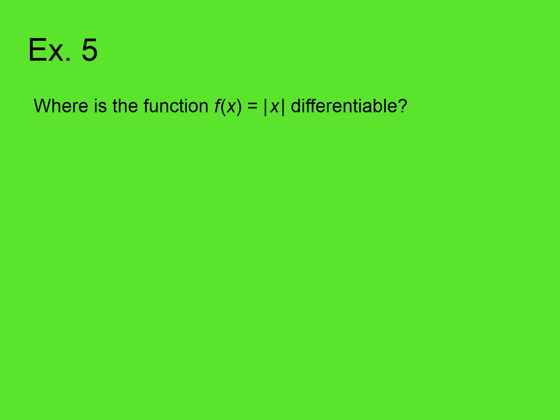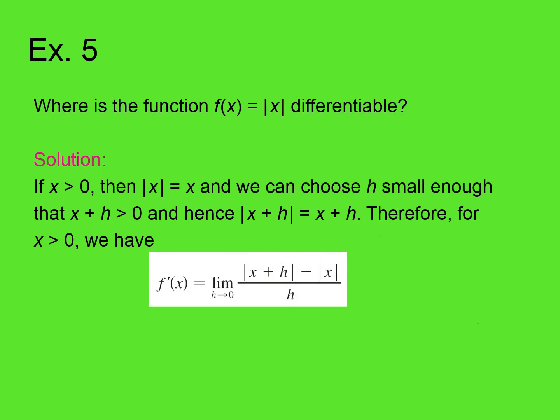So here's such a problem: where is the function f of x equals absolute value of x differentiable? We're thinking about the set of numbers a such that f prime of a exists. Well, for positive numbers, absolute value of x is just x — the absolute value of anything positive is just the thing. You don't need the absolute value bars. And we can choose h small enough such that x plus h is greater than zero, because h is going to zero.